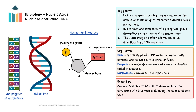Note the numbers indicated on the deoxyribose molecule. This numbering system is significant for understanding the orientation and directionality of the DNA molecule. The numbering convention starts with the carbon atom adjacent to the oxygen atom in the ring structure, which is carbon 1. Moving clockwise, we can see carbon 2, carbon 3, carbon 4, and carbon 5. Carbon 5 is also connected to the phosphate group in the DNA backbone. Overall, there are 5 carbon atoms, which is why we call deoxyribose a 5-carbon or pentose sugar.